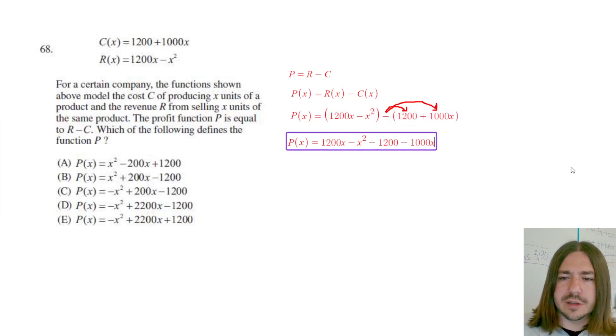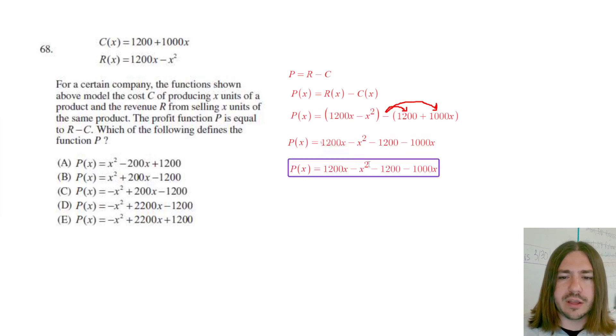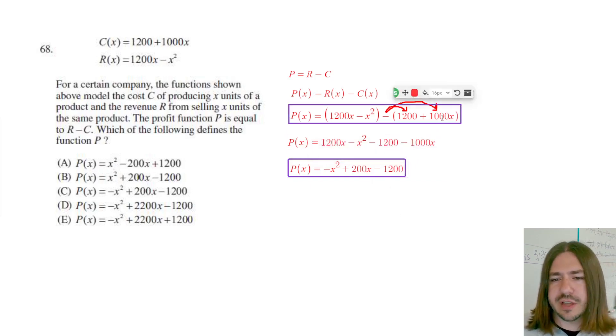All right, let's see. So now we need to rearrange and combine like terms. So I'm going to put my negative X squared up front, and then I'm going to combine the 1200X minus 1000X. And that will be like 1200 minus 1000 is going to be 200. And then we just have the minus 1200 at the end. So that's our answer there.